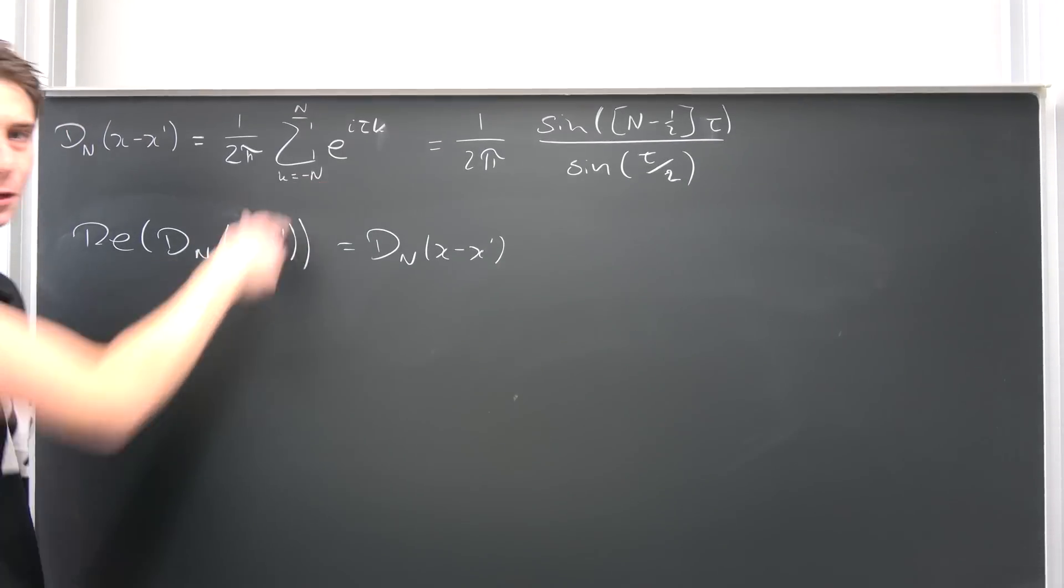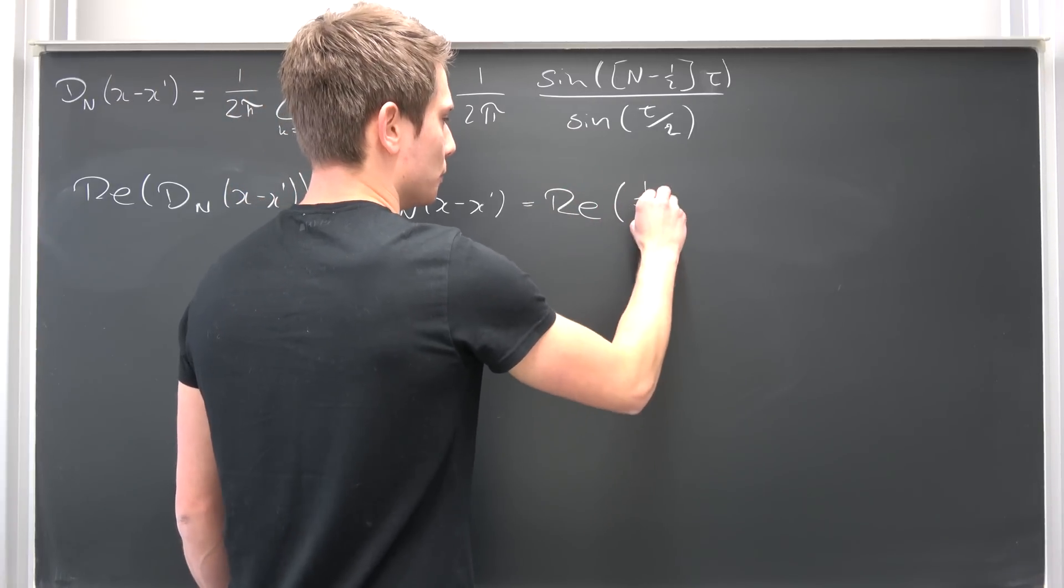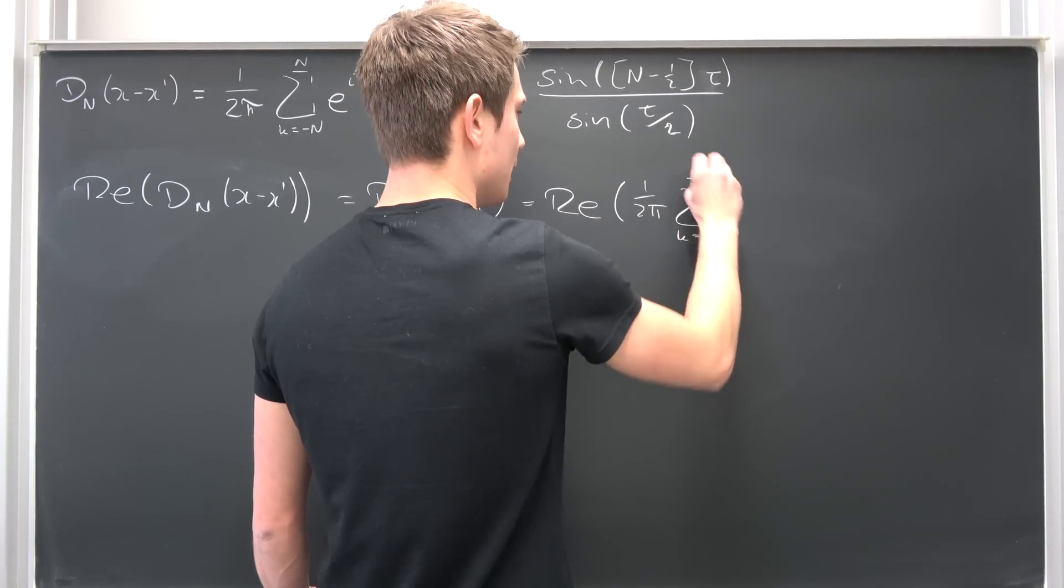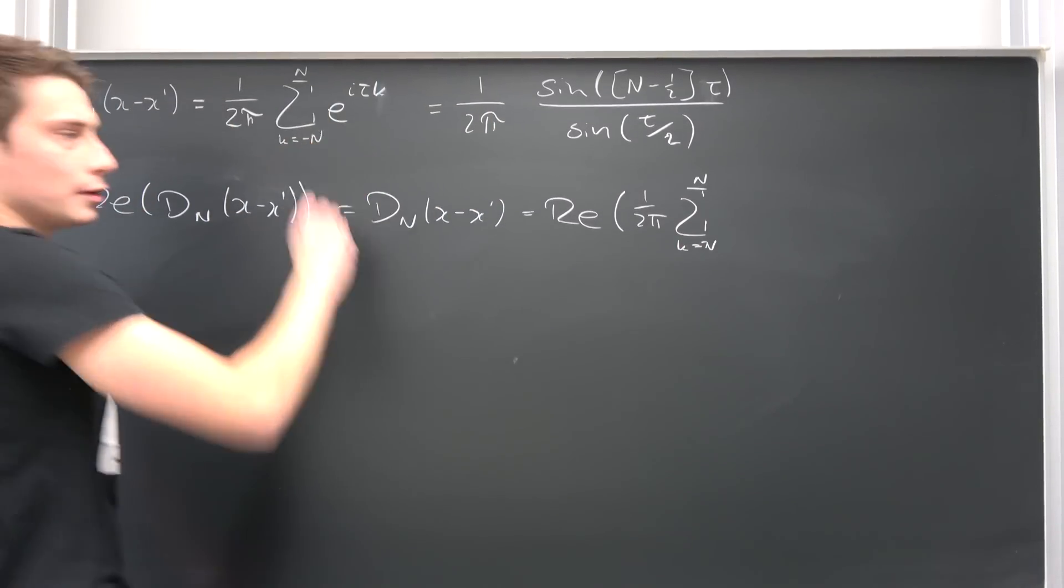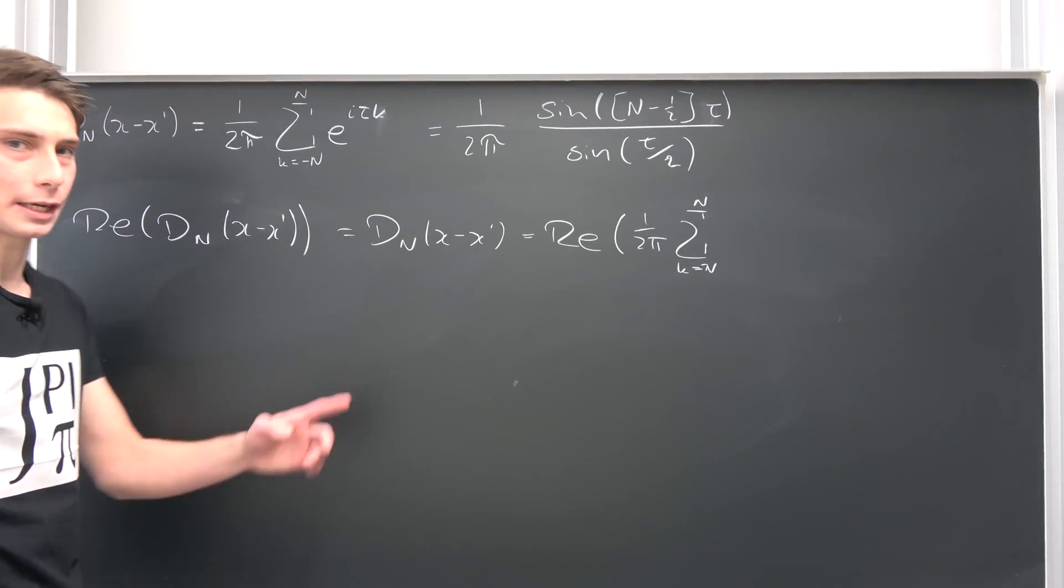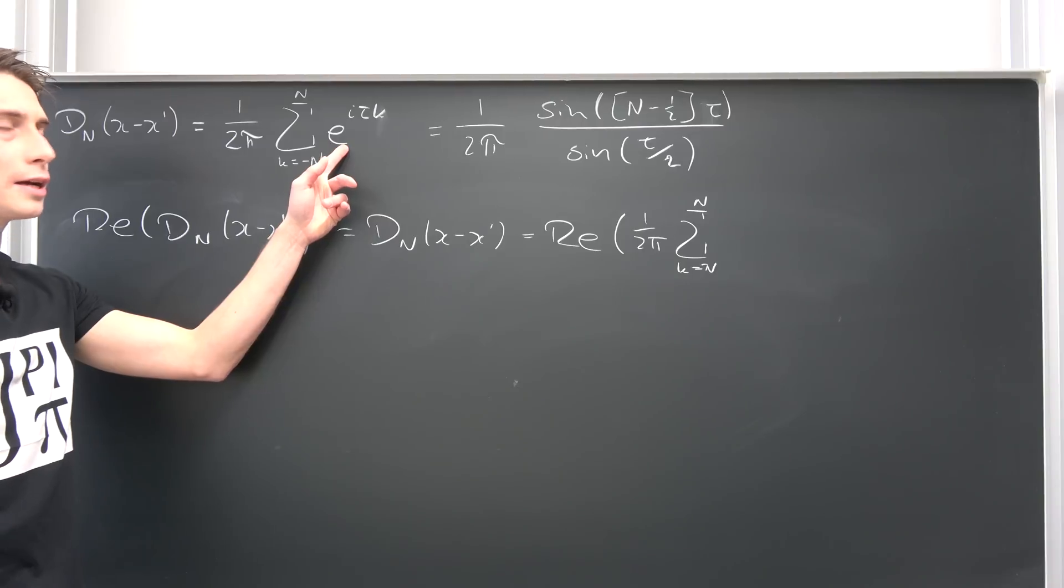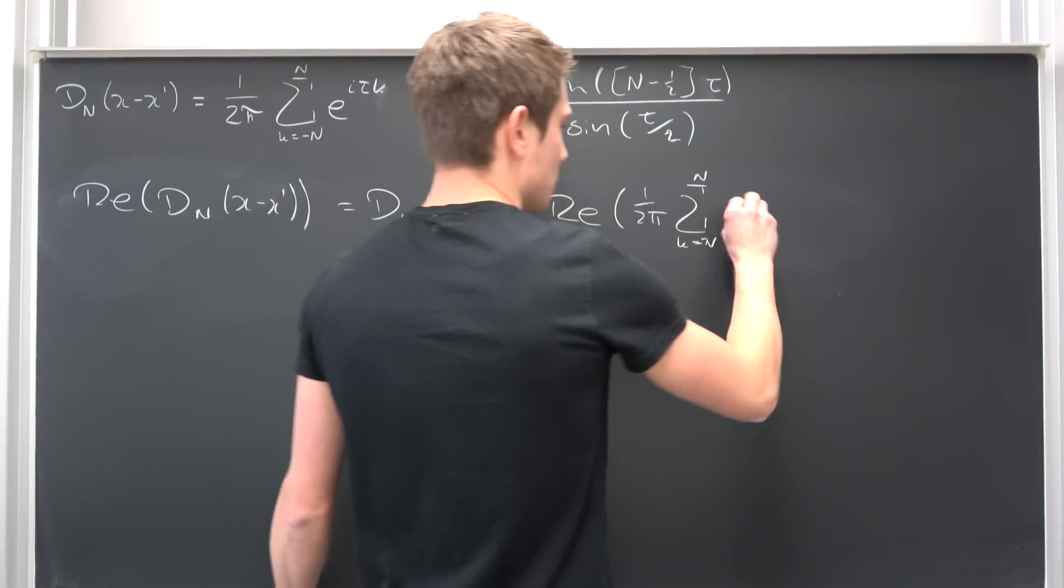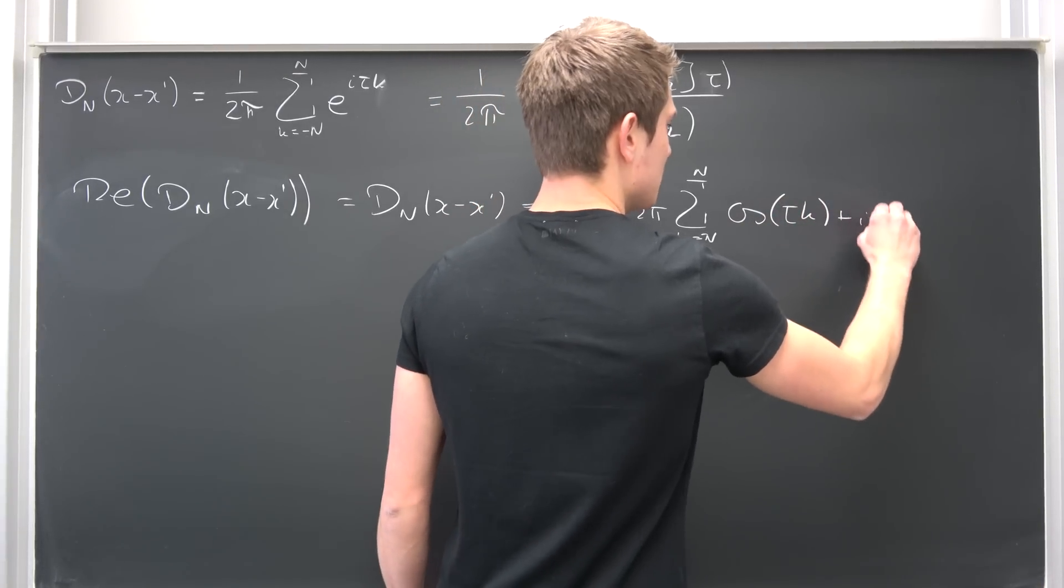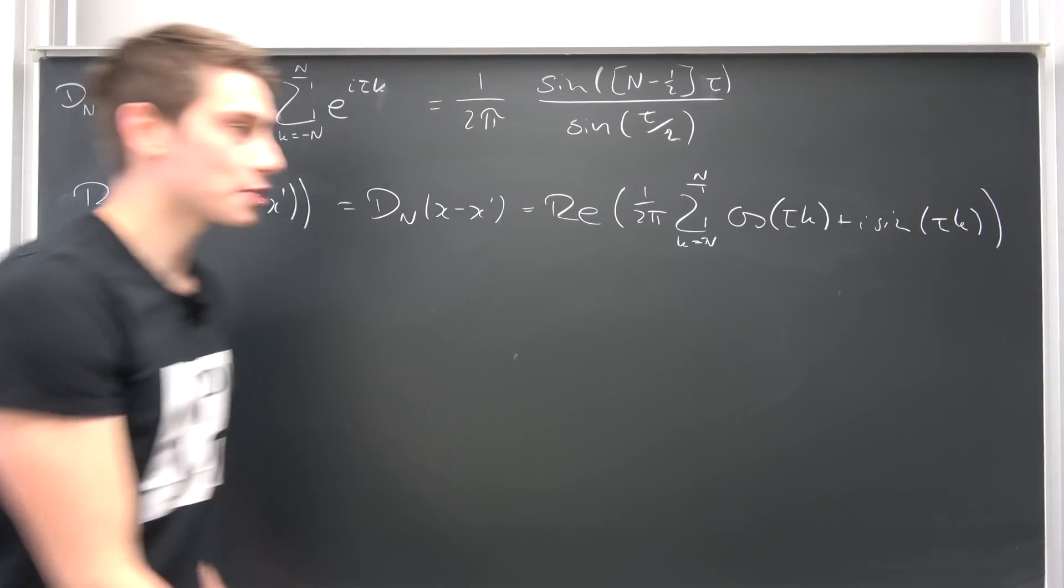But it's also the real part of this whole thing right here. Real part of 1 over 2 times pi times the sum running from negative capital N to capital N of e to the i times tau times k. But we can make use of Euler's formula on here. This is going to be the cosine of tau times k plus i times the sine of tau times k. And that's already quite good.